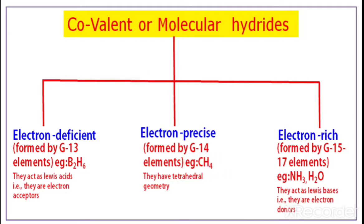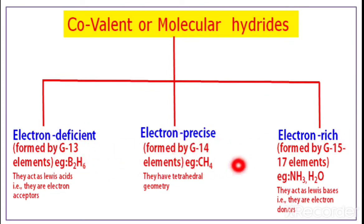Electron precise hydrides are formed by group 14 elements — the carbon family: carbon, silicon, germanium, tin, and lead. Example: CH4, which has a tetrahedral geometry. Electron rich hydrides are formed by group 15 to 17 elements. Examples are NH3 and H2O, and they act as Lewis bases — meaning they donate electron pairs.